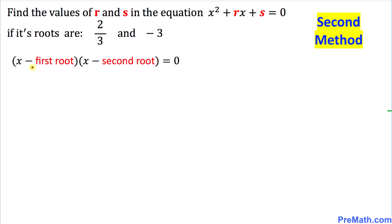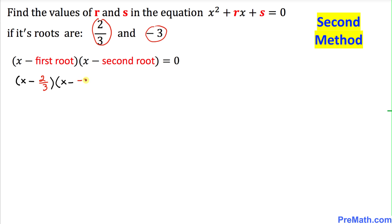We are going to use this formula: x minus the first root, times x minus the second root, equal to 0. Let's fill in the blanks: x minus 2/3, times x minus negative 3, equal to 0. Now let's focus on this very first factor x minus 2/3.